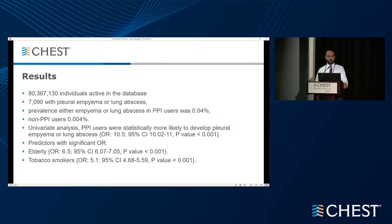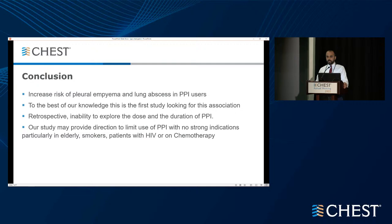PPI users were statistically at higher risk of developing lung abscess or pleural empyema with an odds ratio of 10. In PPI users, predictors of higher odds ratio were older age, smoking, HIV, and chemotherapy. We conclude that PPI use is associated with higher prevalence of lung abscess and pleural empyema. Limitations include the retrospective design and use of a database, which prevented us from evaluating PPI dose or duration. We invite you not to use PPIs in the absence of a strong indication, especially in high-risk patients.